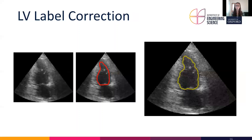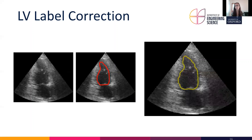The same is shown for the left ventricle label correction. Initially the contour is very smooth and doesn't precisely follow the image edges, but on the right you can see that the contour has evolved to fit the image edges a lot better.